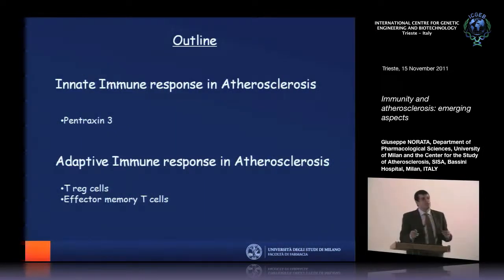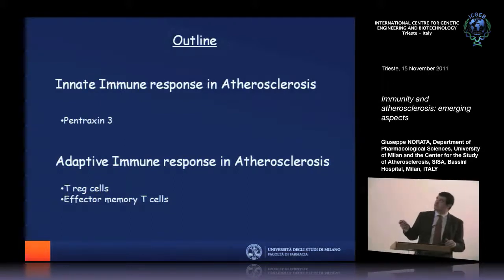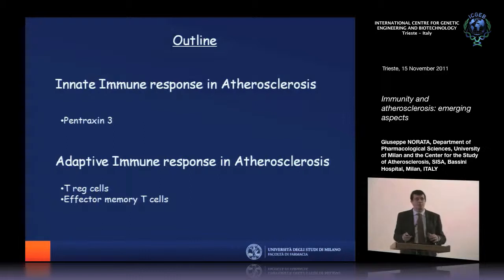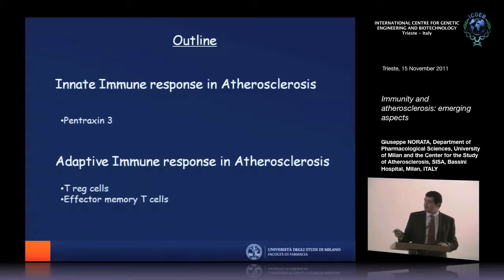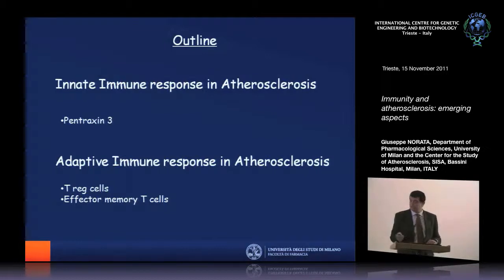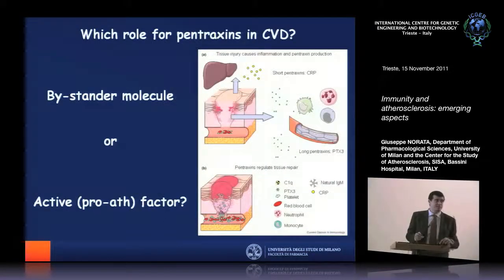The idea today is to share some of our recent data, going from aspects of the innate immune response to aspects of the adaptive immune response. I will talk about pentraxin-3, which is one of the pentraxins — acute phase proteins that are part of the humoral arm of the innate immune response. Then we will move to T regulatory cells, and finally focus on a subset of T cells: specifically effector memory T cells.